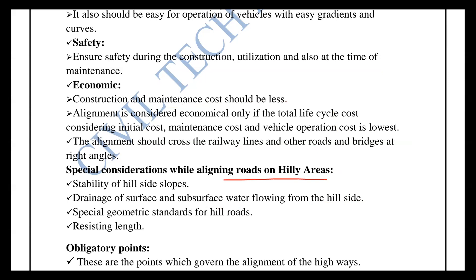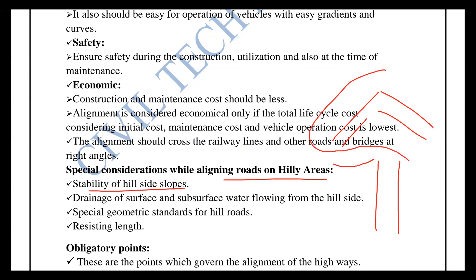In a hill area, we need to consider the stability of the side slope. The side slope stability of the hill is important. We may need a tunnel. We have to avoid heavy cutting — we can cut a hillside and do road alignment to avoid heavy cutting. This is a big factor we have to consider.